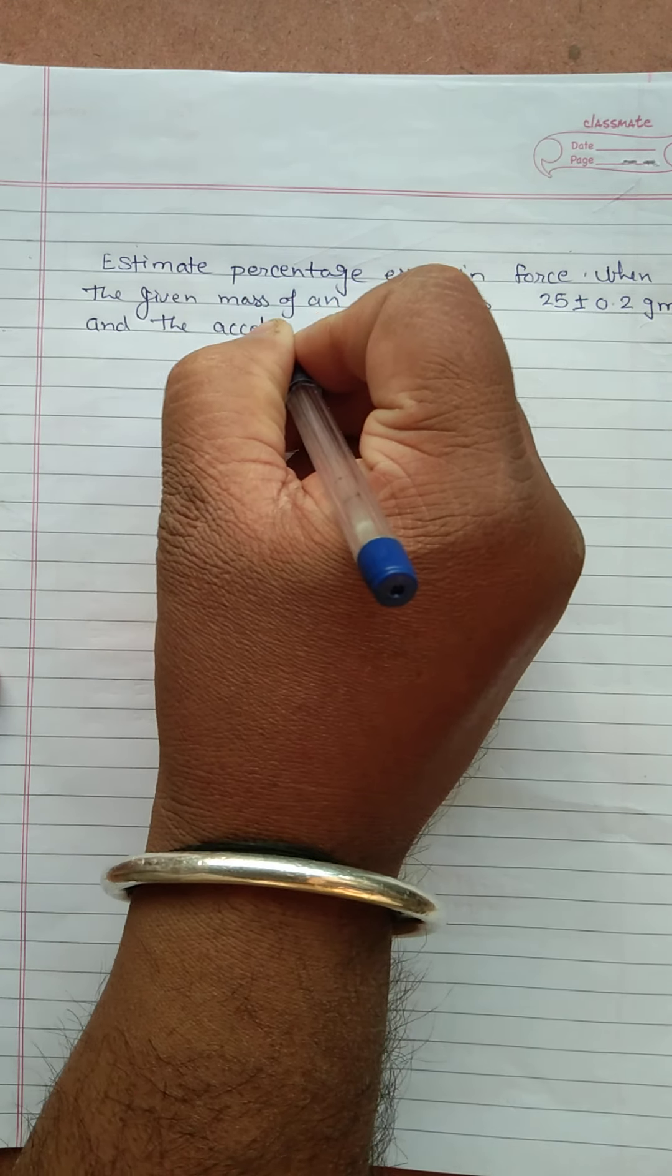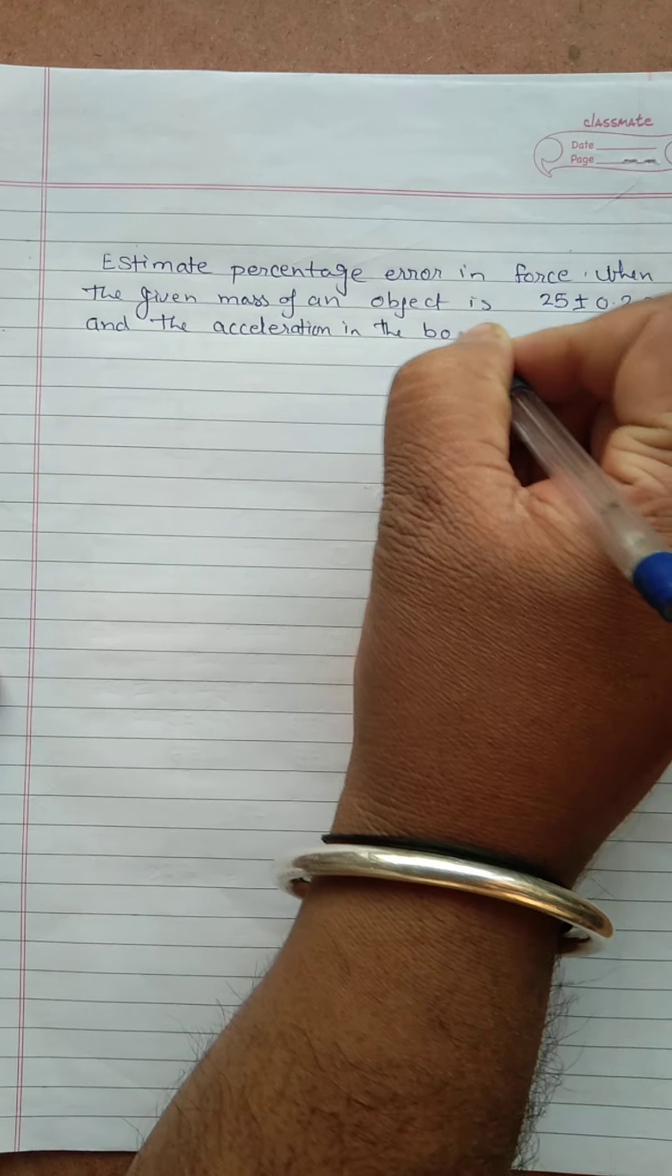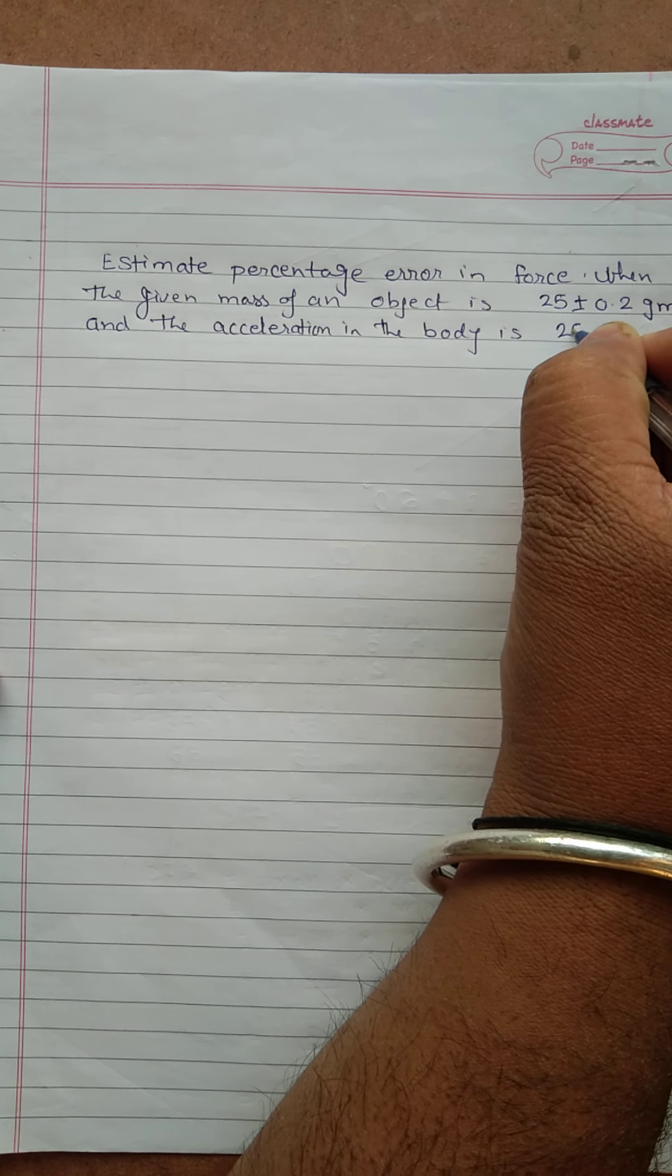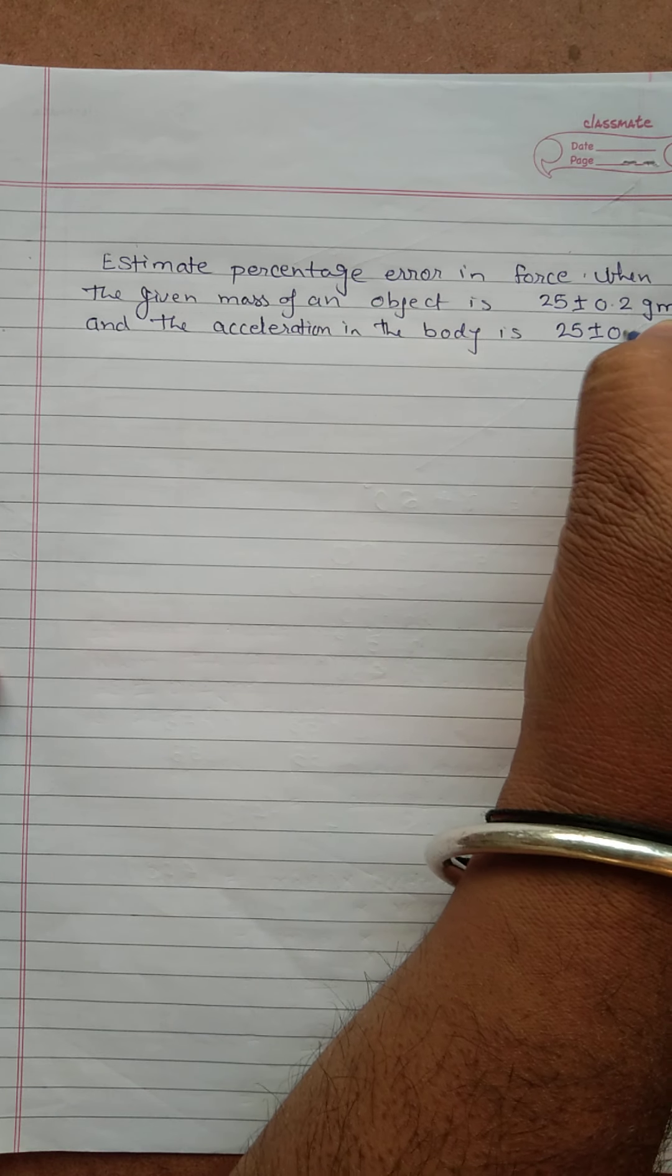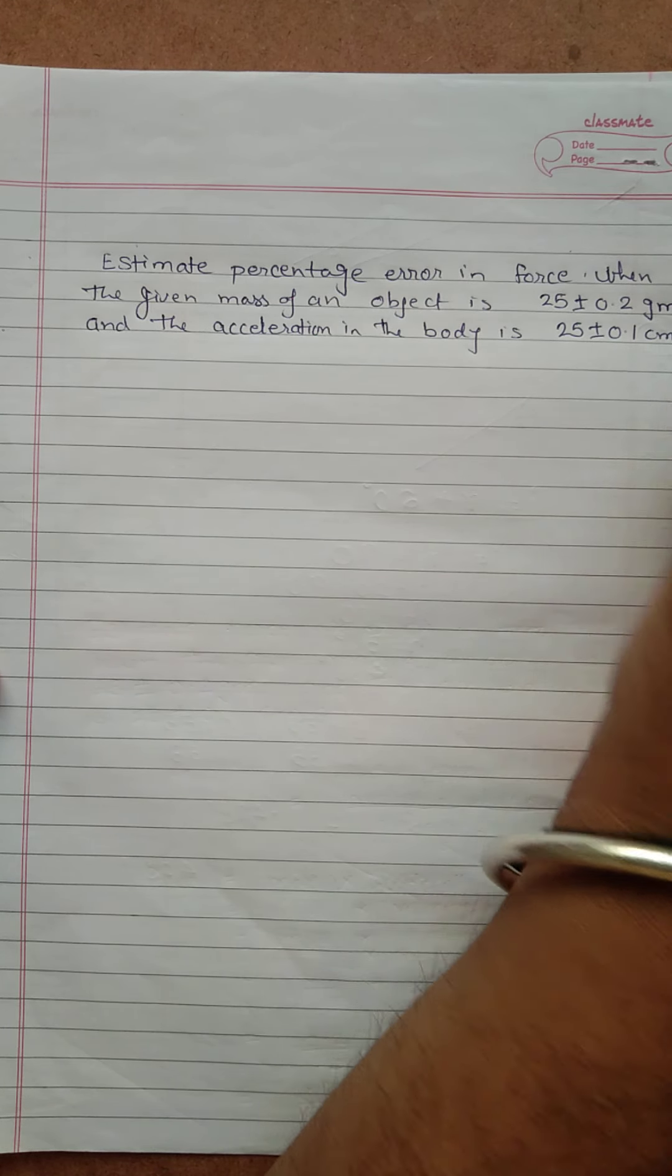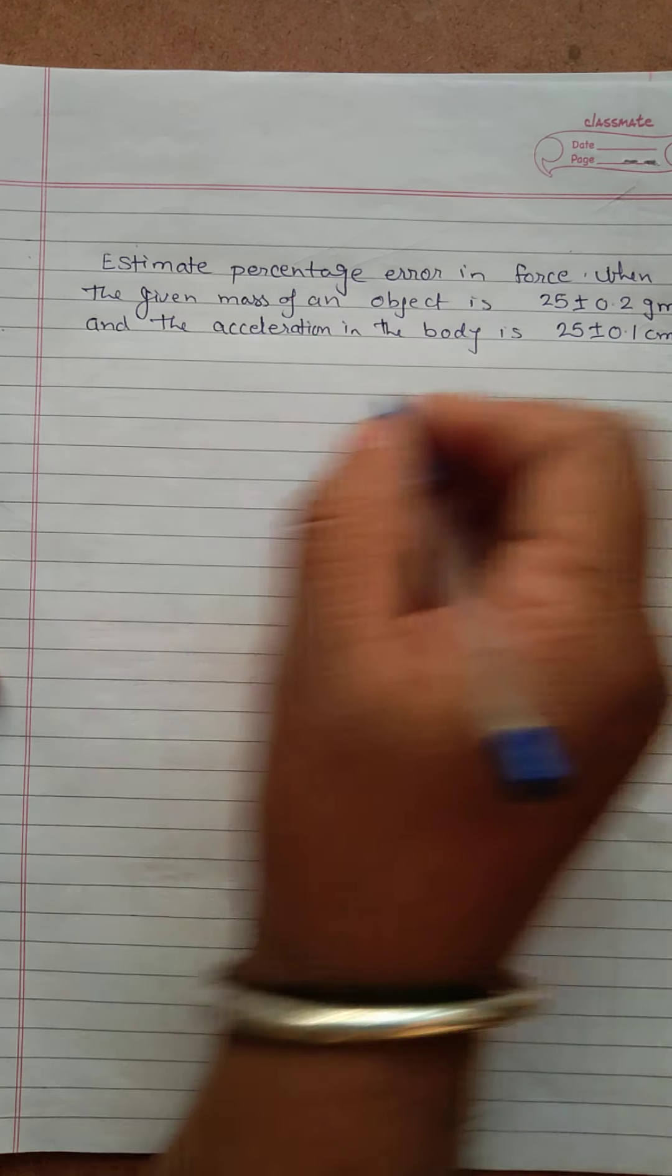...in the body is 25 plus minus 0.1 centimeter per second square. Okay, here we need to know first the formula for force.